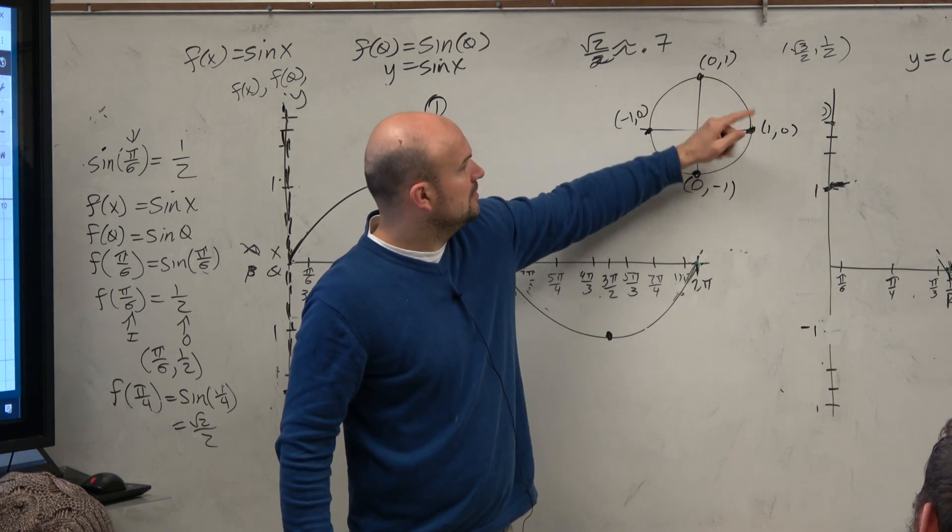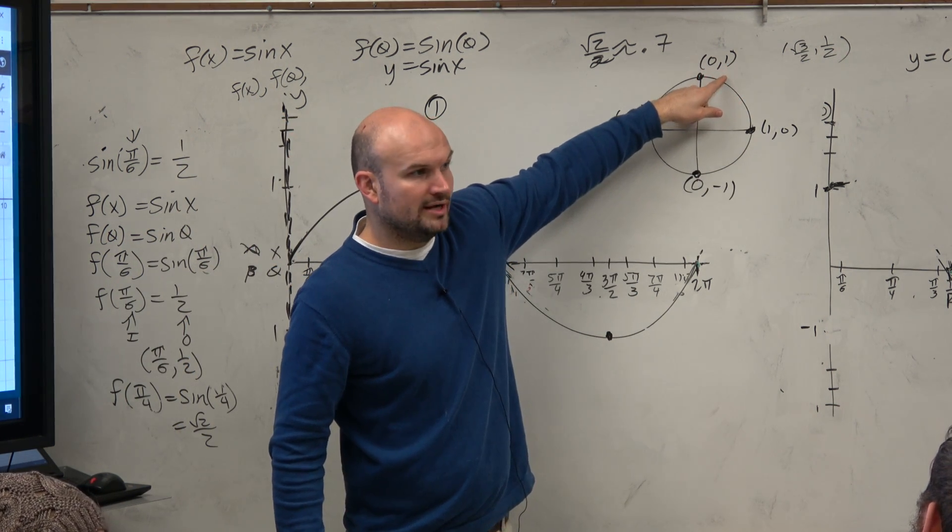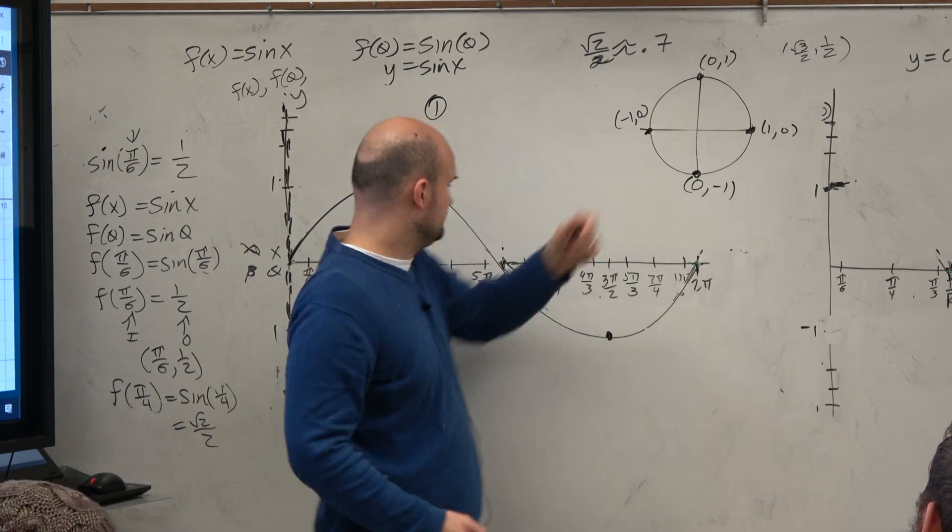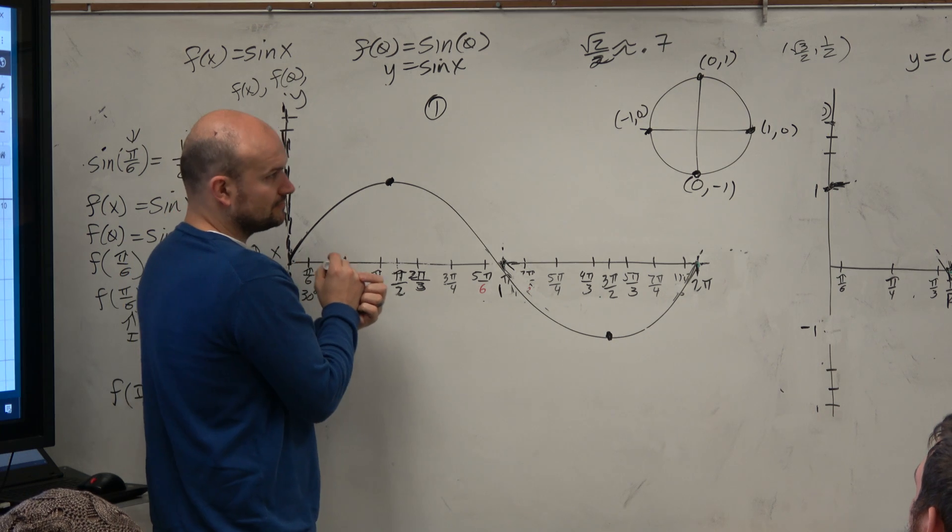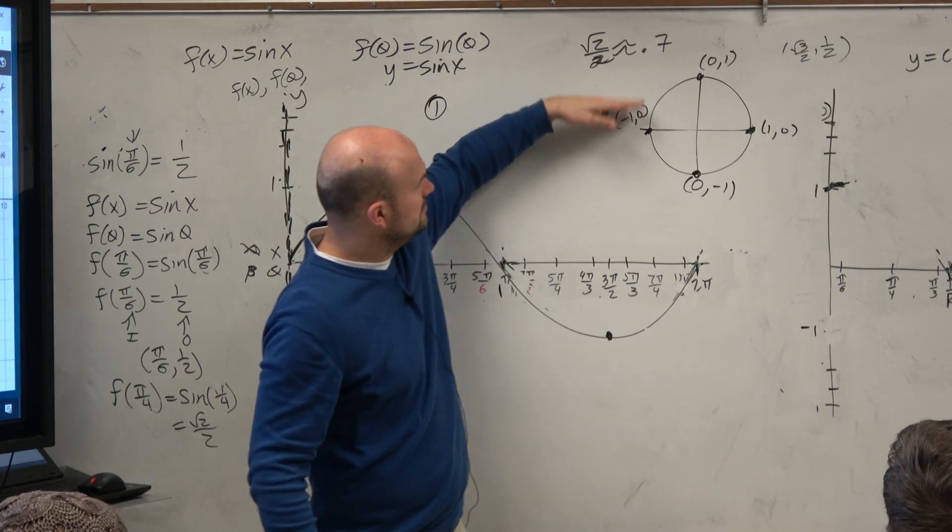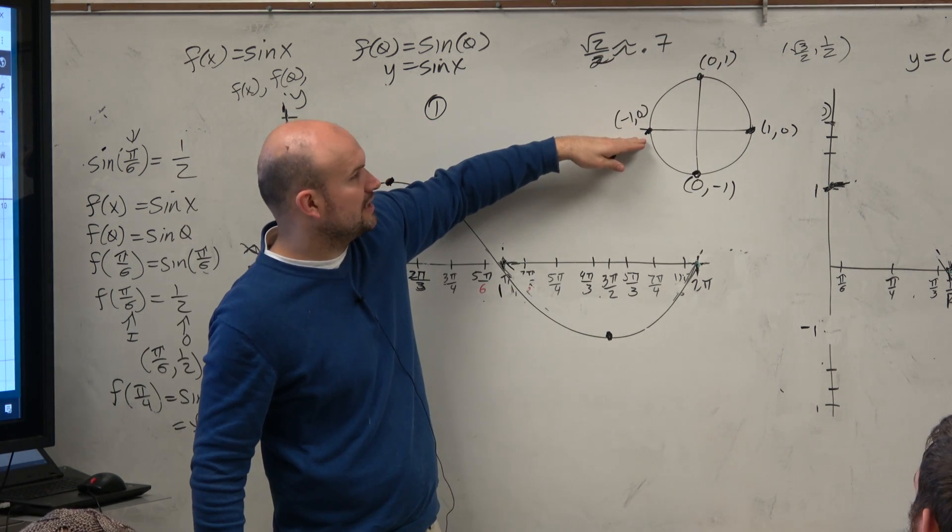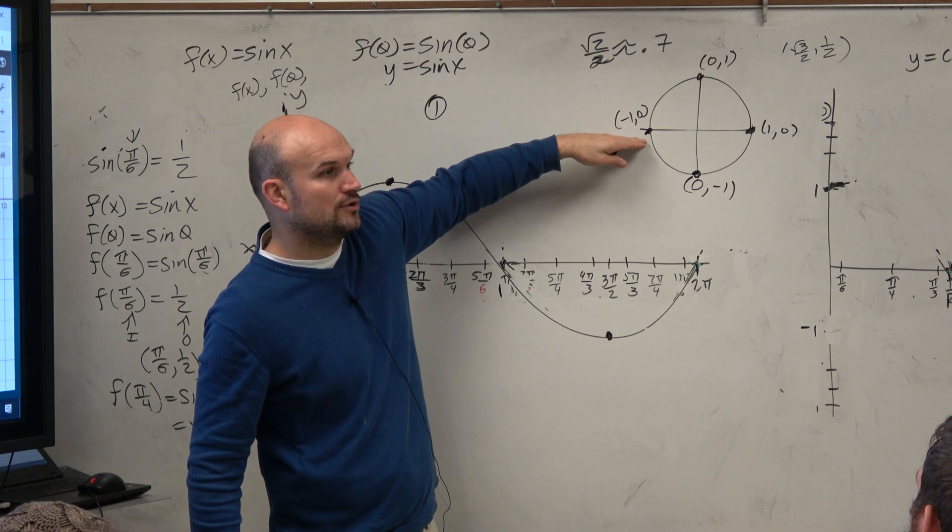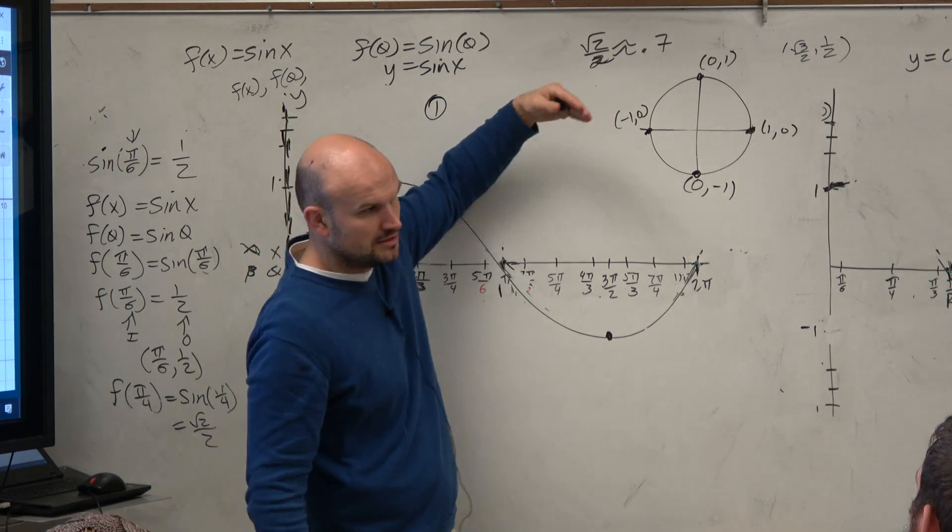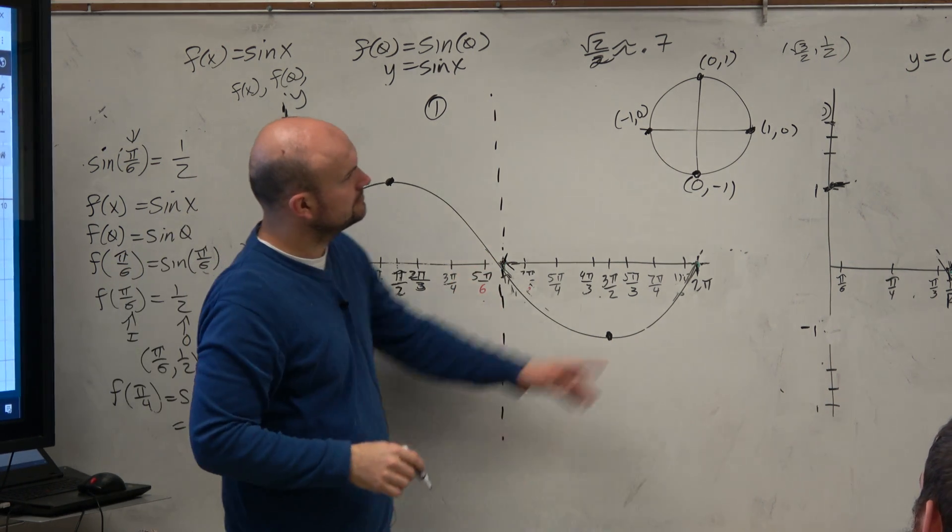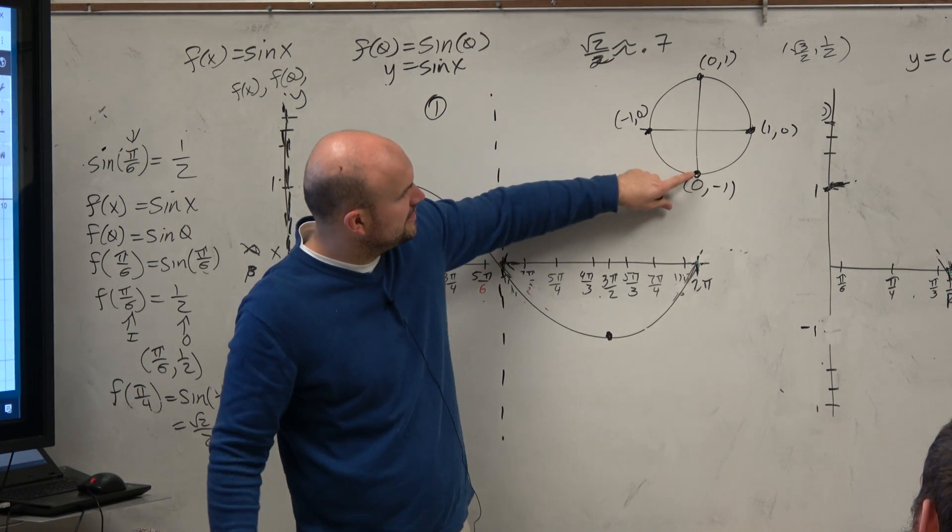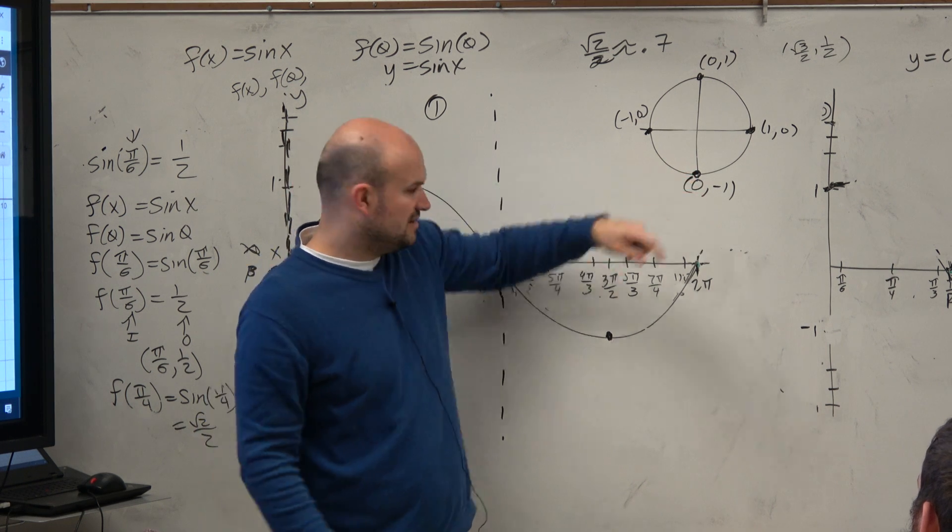Now let's go to pi halves. 1 over 1, which is just going to be 1. So at pi halves, my cosecant graph is 1. At pi, my cosecant graph is, again, 1 over the y-coordinate, which is 0. So 1 over 0 is undefined. So at pi, and then when I go down to here, I again have negative 1.